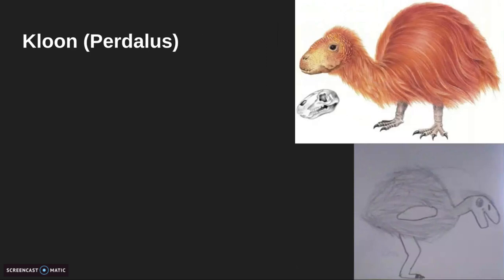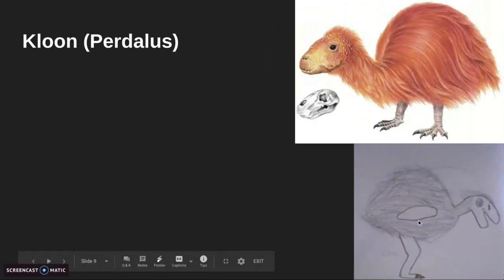All right, next is the Clune or the Perdaleus. This is like a moa. This is like a Pterosaur moa. So I just added the Pterosaur arms, and I had some feathers, and I had no teeth. Pterosaurs didn't have teeth, but in the skull it has teeth. That's a big old no-no. I gave it a toothless beak, but it was more strong, and I gave it bigger legs.